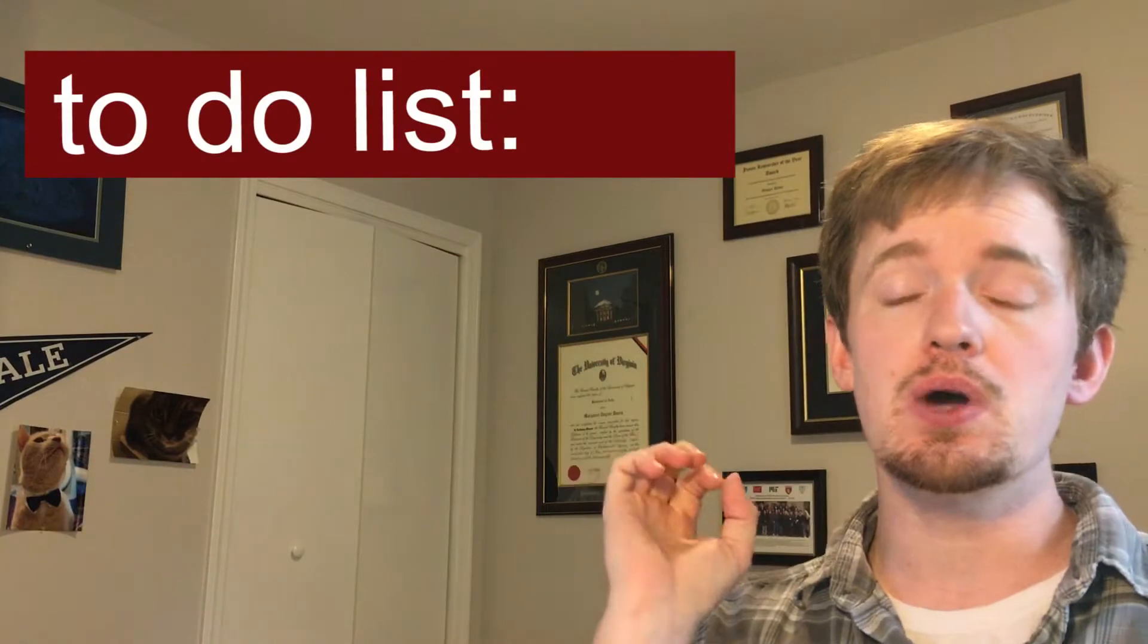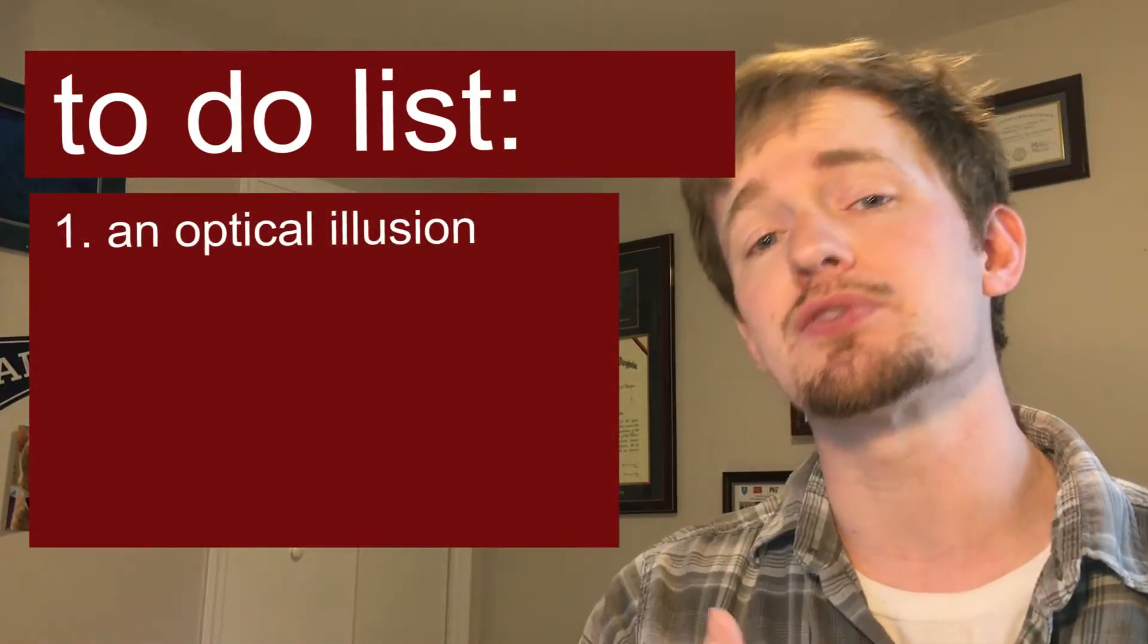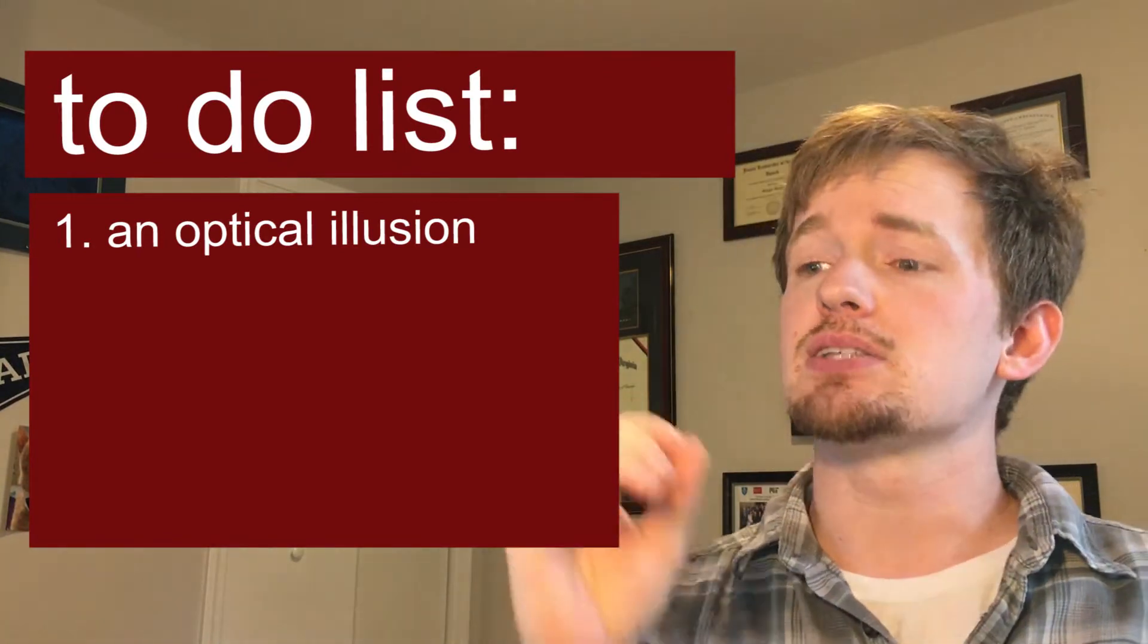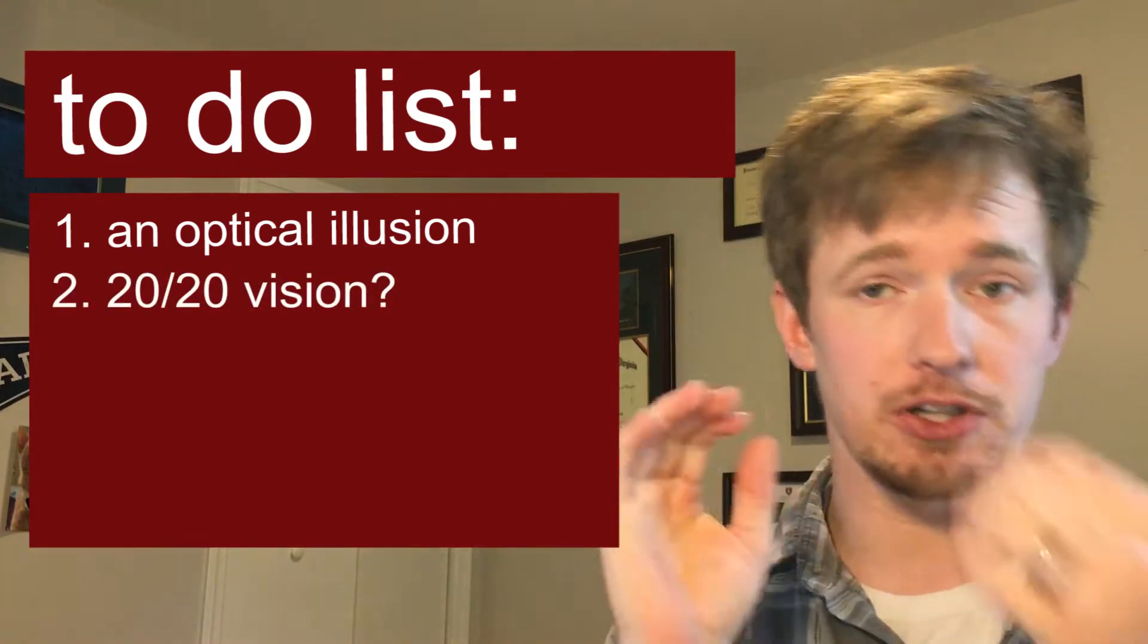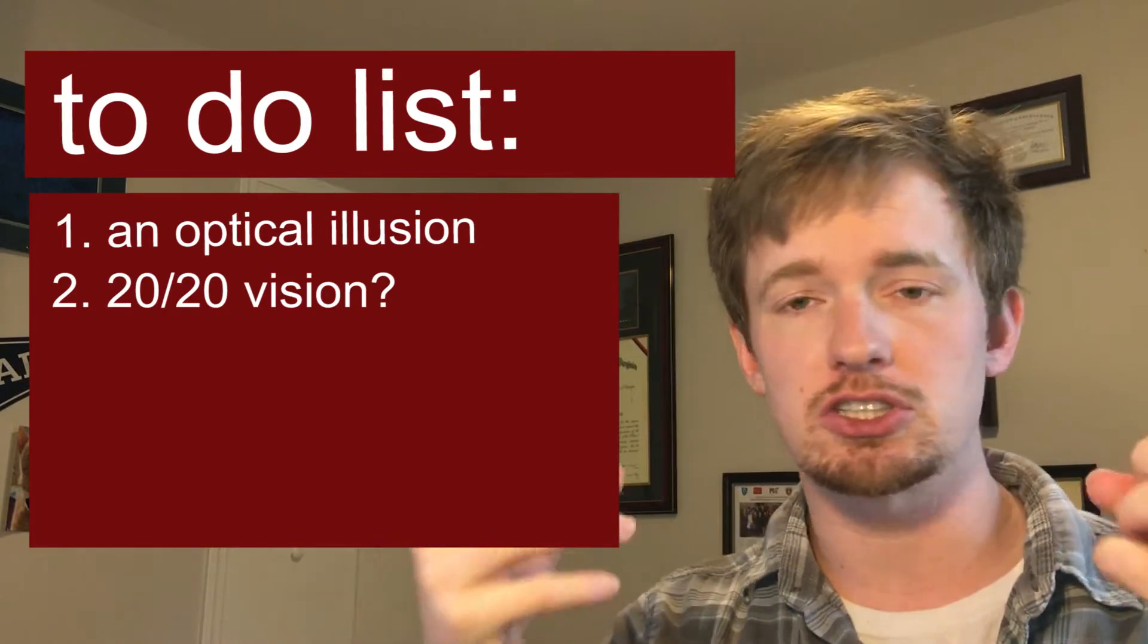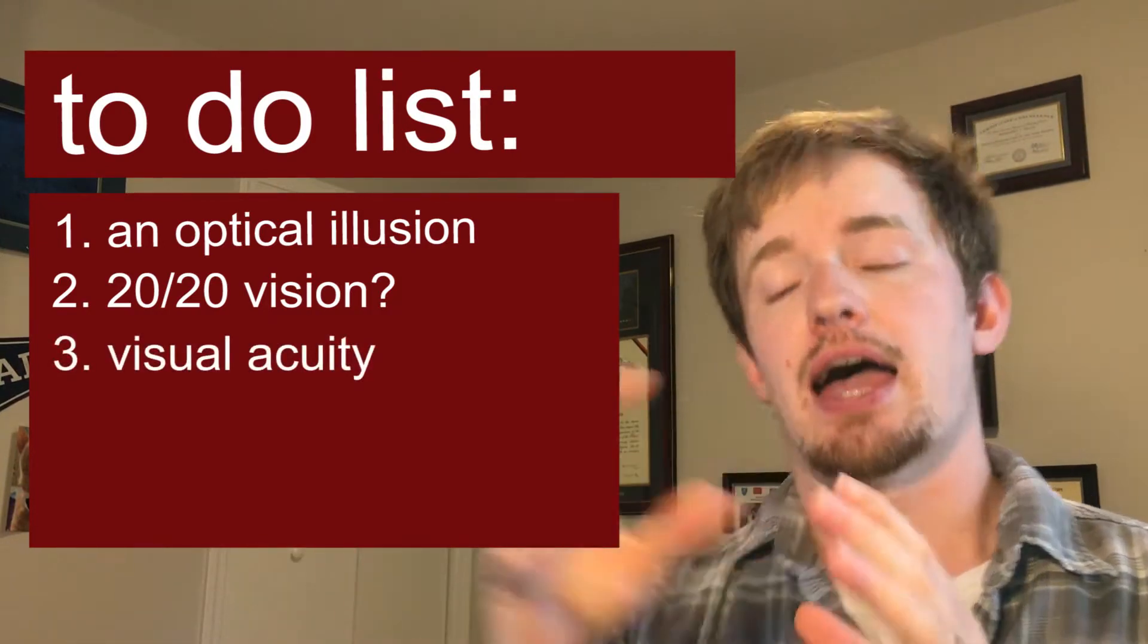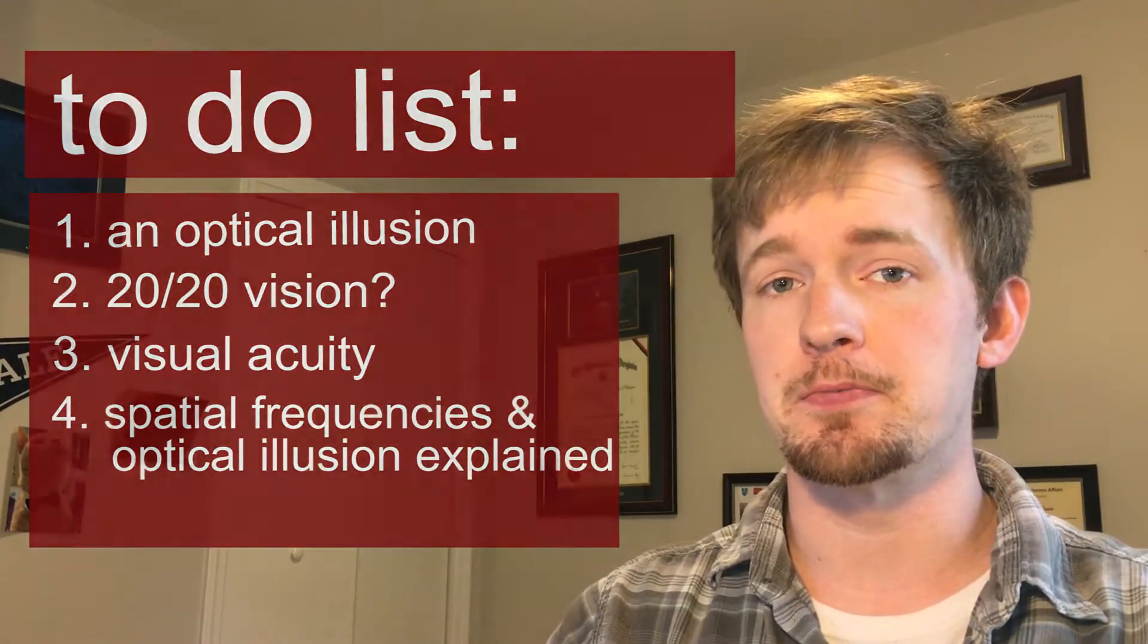So what we're planning on talking about is first I'm going to show you something called a hybrid image, and this hybrid image is going to be an optical illusion that was first really kind of discovered in the 90s by a researcher at MIT and at the University of Glasgow, and then we're going to be looking at what it means to have 20-20 vision. So whenever you talk about eyesight, 20-20 vision or 20-10 vision or 10-20 vision, we'll talk about what that means, how that relates to visual acuity, and then finally, how all of that stuff is going to lead into this optical illusion that I'm about to show you.